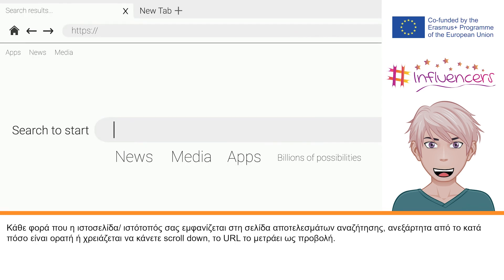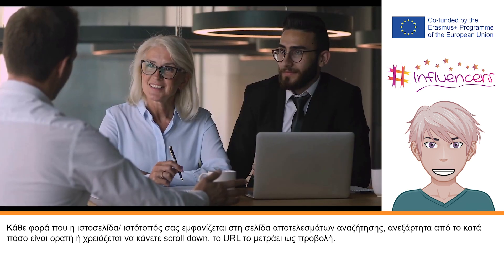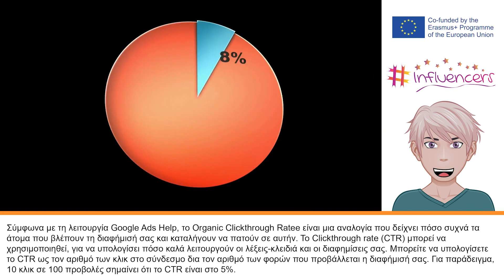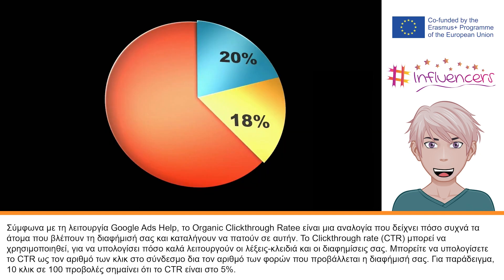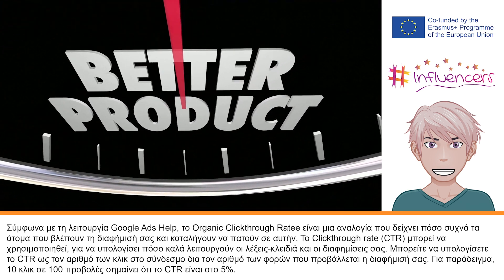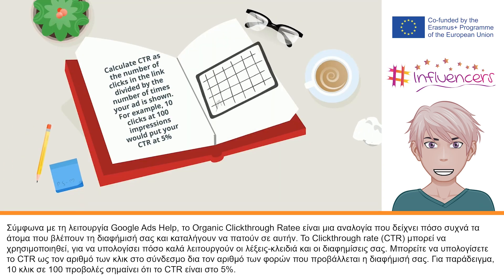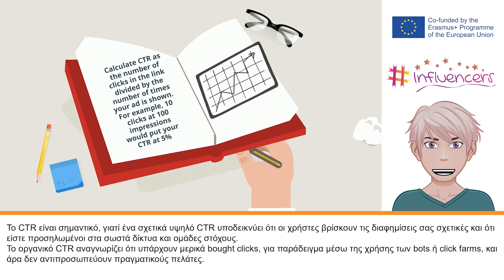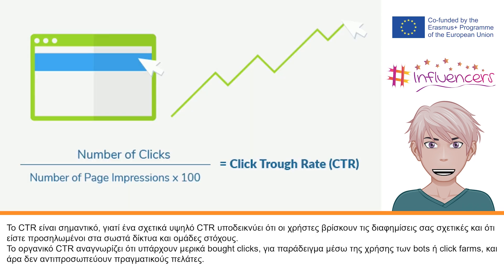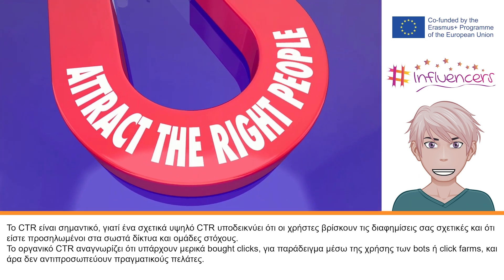Anytime your website or webpage appears in a search result page, irrespective of whether it's visible or you need to scroll down, the URL counts it as an impression. According to Google Ads Help, organic click-through rate is the ratio showing how often people see your ad and end up clicking it. Click-through rate, or CTR, can be used to gauge how well your keywords and ads are performing. You can calculate CTR as the number of clicks on the link divided by the number of times your ad is shown. For example, 10 clicks at 100 impressions would put your CTR at 5%. CTR is important because a relatively high CTR can indicate that users find your ads relevant and can show that you are focused on the right networks and target groups.